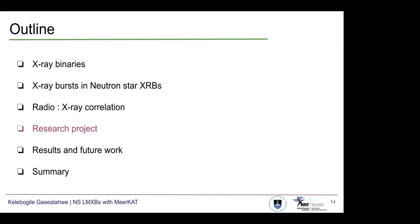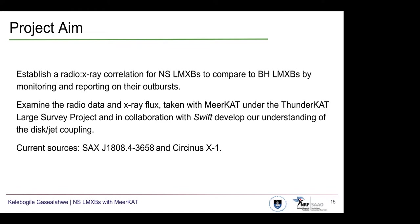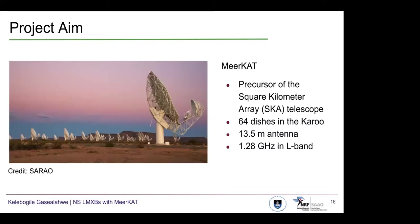I will now discuss my current research and how it ties into these concepts. The aim of my project is to establish a radio X-ray correlation for neutron star low mass X-ray binaries, adding to the current population so that black hole and neutron star low mass X-ray binaries can be compared to develop a more universal understanding of this disk-jet coupling. I am examining radio data taken with MeerKAT — the SKA precursor, set in the Karoo of South Africa — consisting of 64 dishes, 13.5 meters in diameter, with observations taken mostly in the L band at 1.28 gigahertz.